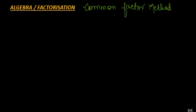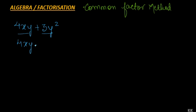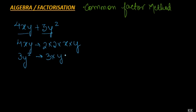Let us understand it with an example. Suppose we have the algebraic expression 4xy plus 3y square. There are two terms here. The first term 4xy has got the factors 2, x, and y, and 3y square has got the factors 3, y, and y. So we see that among the two terms, y is a common factor.